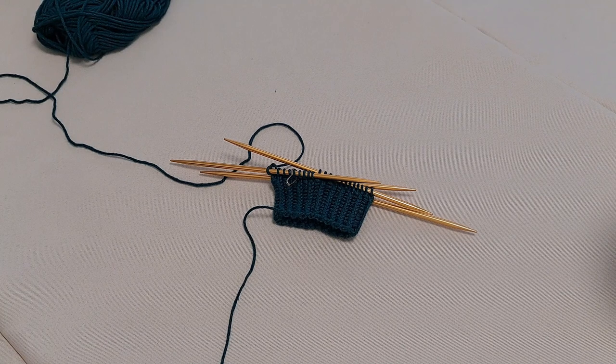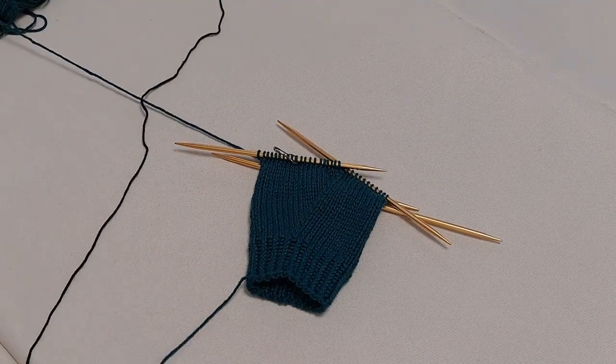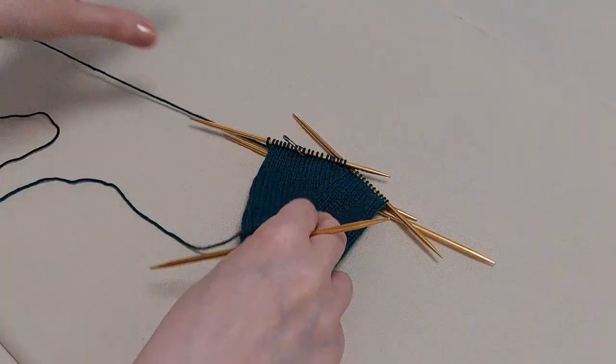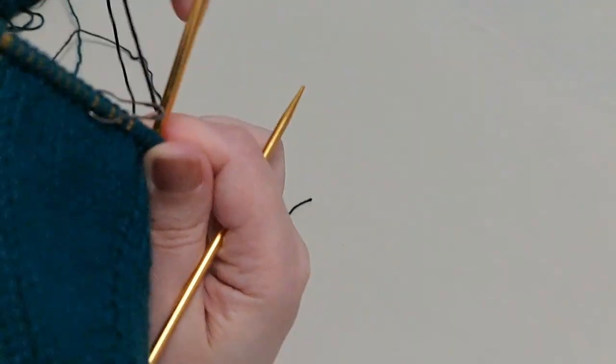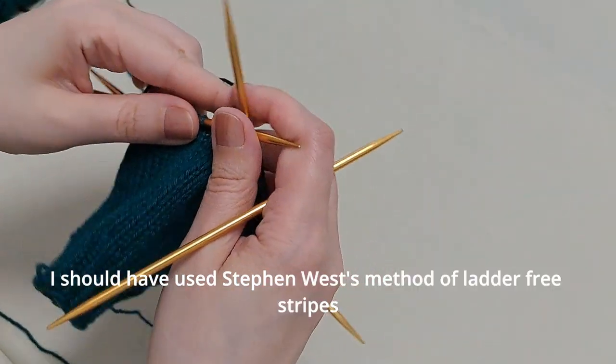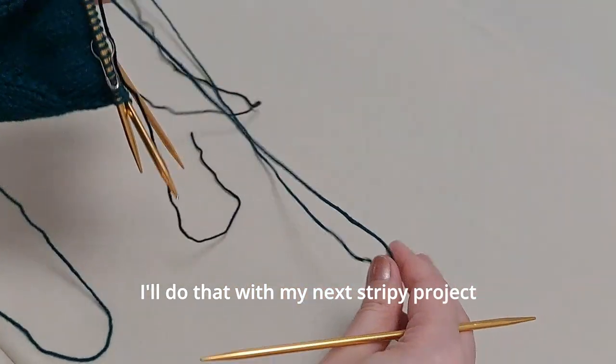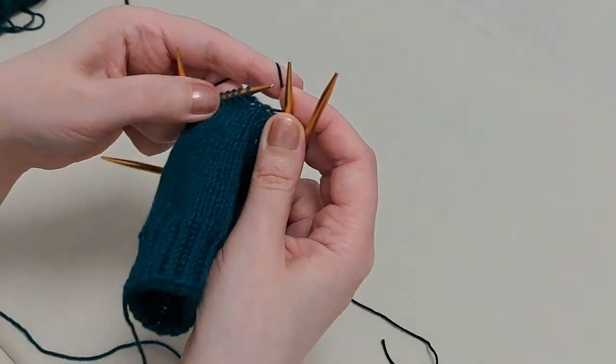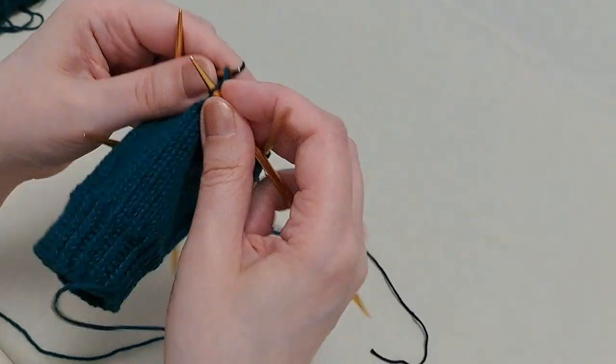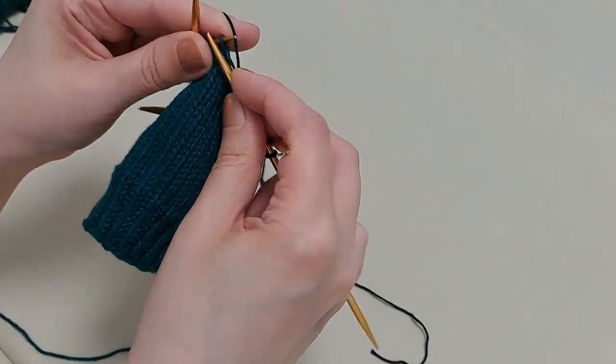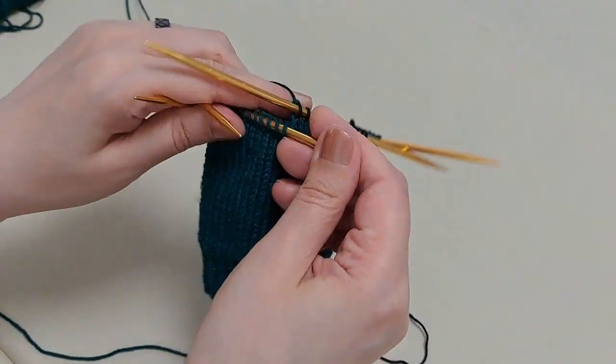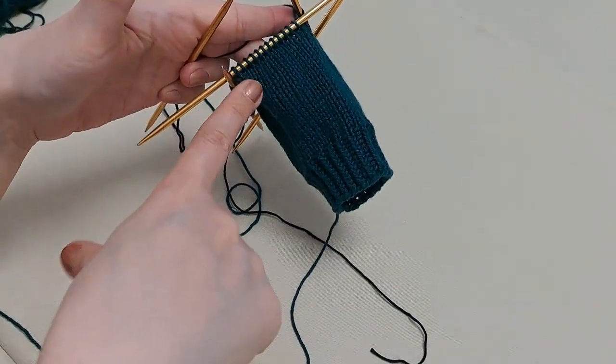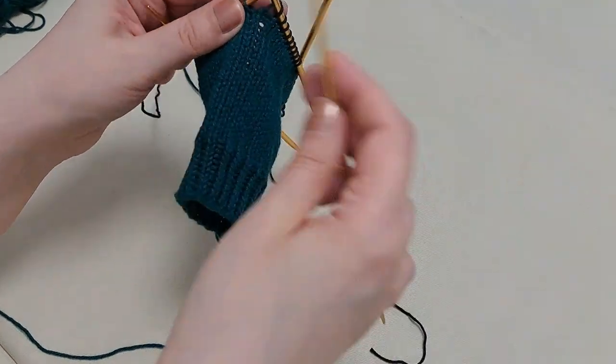After that cast off these 12 stitches to create the thumb hole and continue just like in the first glove. I've worked my last increase here and now as I have ended the increases it is time to bring in the contrast color. I'm going to start working with my black yarn and I will work through needles one and two in the very ordinary fashion just knitting every stitch. As I reach the 12 stitches on needle three I'm going to cast them off.